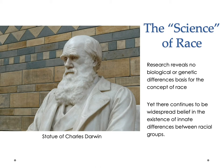This comes from a Swedish taxonomist. Taxonomists are people who create taxonomies, ways of classifying. And Linnaeus split humans into four subspecies: Americans, Europeans, Asians, and Africans.